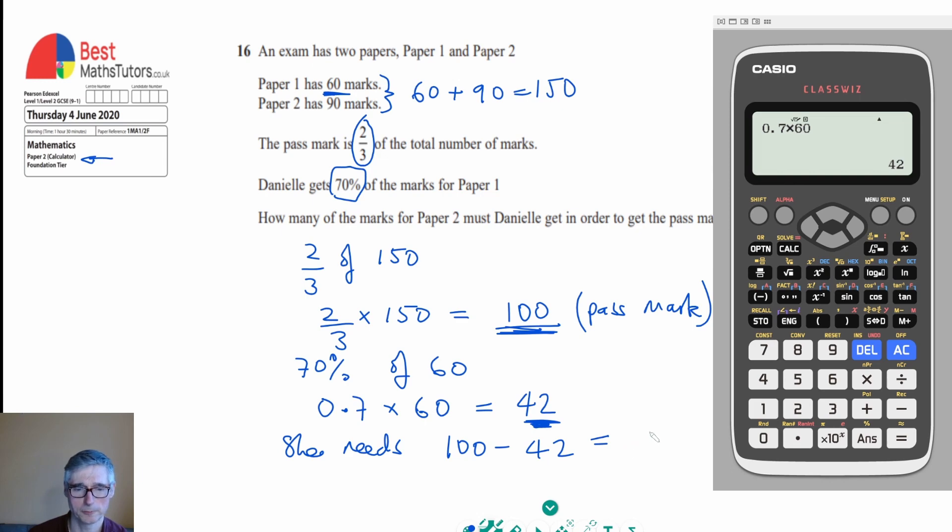But if I work that out, that's 58. So she's actually got to score 58 marks on the second paper. And that's it. That's the question completed. So I hope that's been helpful to you. And if it has, please consider subscribing to the channel and also giving the video a thumbs up. Thanks for watching.